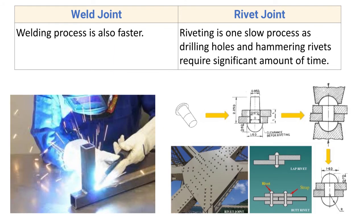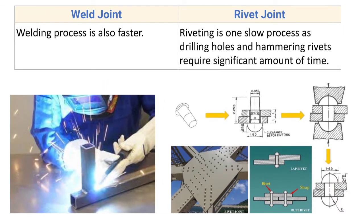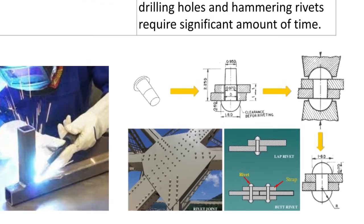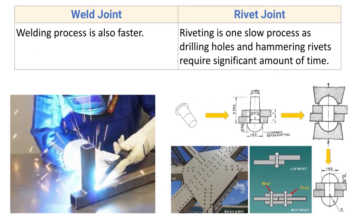Welding process is a faster process compared to riveting. Riveting is slow as drilling holes and hammering rivets require a significant amount of time. First holes are drilled for the passage of rivets, then rivets are inserted and load is applied to fix them in place.